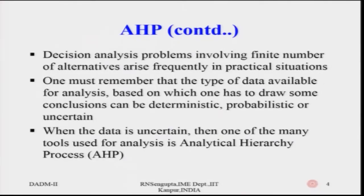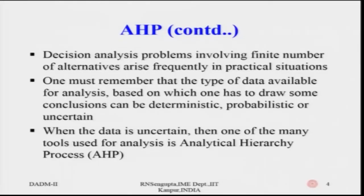AHP handles decision analysis problems involving a finite number of alternatives. For buying a car, alternatives and criteria include cost, luggage space, safety, price, mileage, resale value, and passenger space — that is, the number of passengers who can sit in the car. When you consider all these important factors, two very good examples are the car and the house purchase decisions.